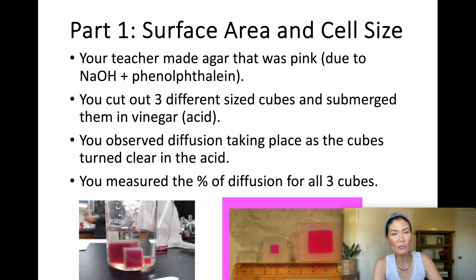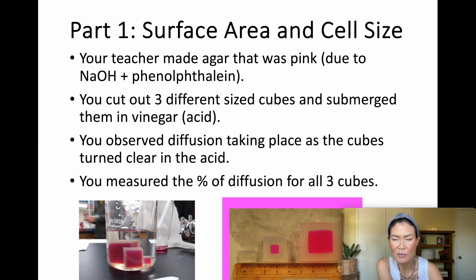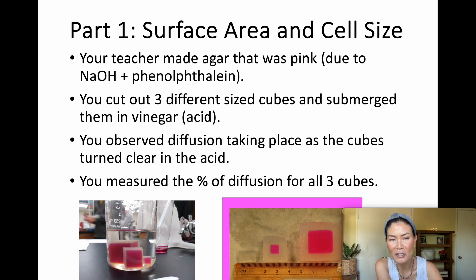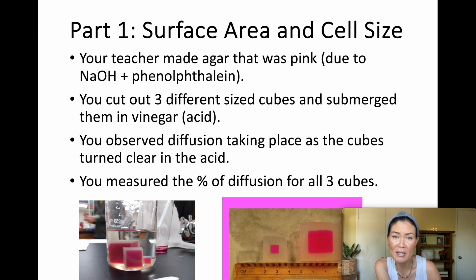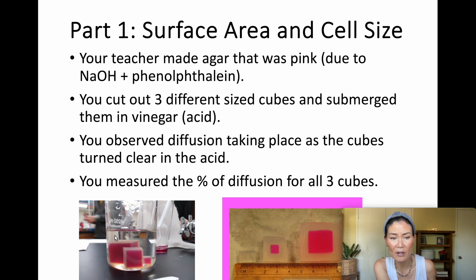For part one, I made some agar, which is a type of sugar from seaweed, dyed pink. I did that by mixing the agar with phenolphthalein and NaOH. NaOH is a base and phenolphthalein is an indicator — it turns pink in the presence of a basic solution. You cut out three different size cubes — small, medium, large — and submerged them in vinegar, which is acidic. The vinegar diffuses into the agar and changes it from pink to clear, so you observe diffusion taking place as the cubes turn clear in the acid.